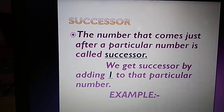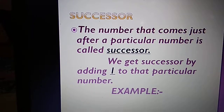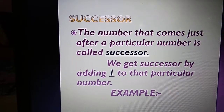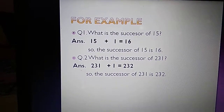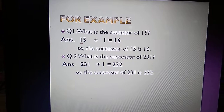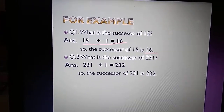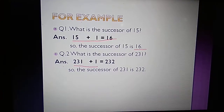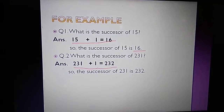The number that comes just after a particular number is called its successor. We get the successor by adding 1 to that particular number. For example, Question 1: what is the successor of 15? When we add 1 to 15, we get 16. So the successor of 15 is 16. Question 2: what is the successor of 231? When we add 1 to 231, we get 232. So the successor of 231 is 232.